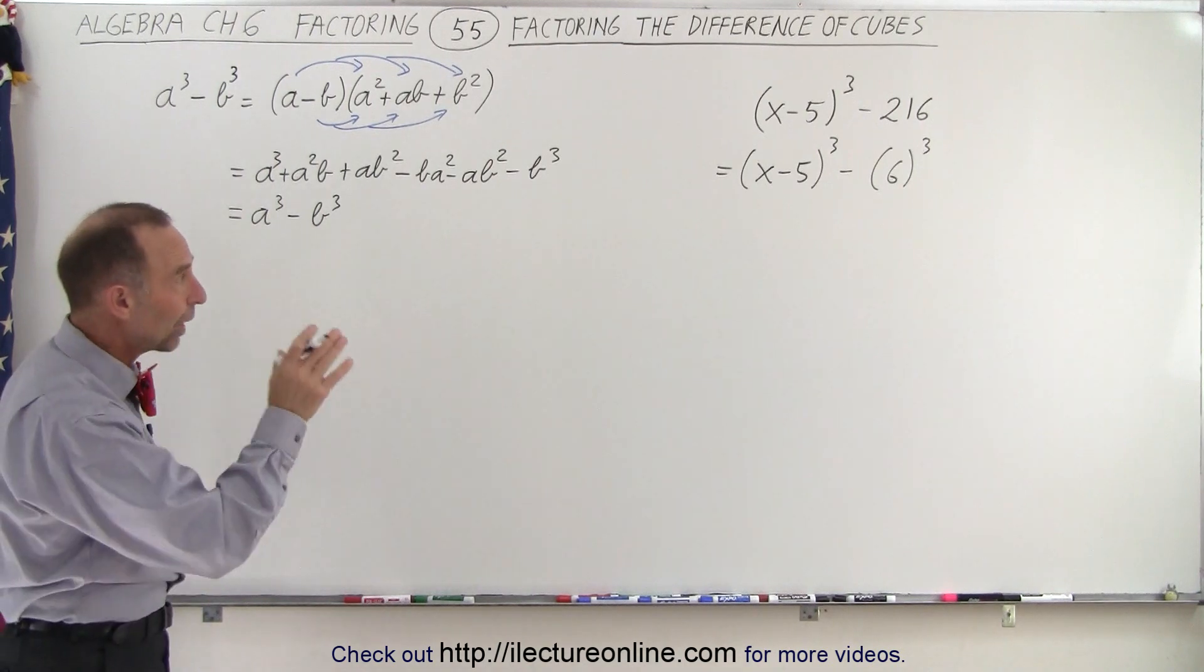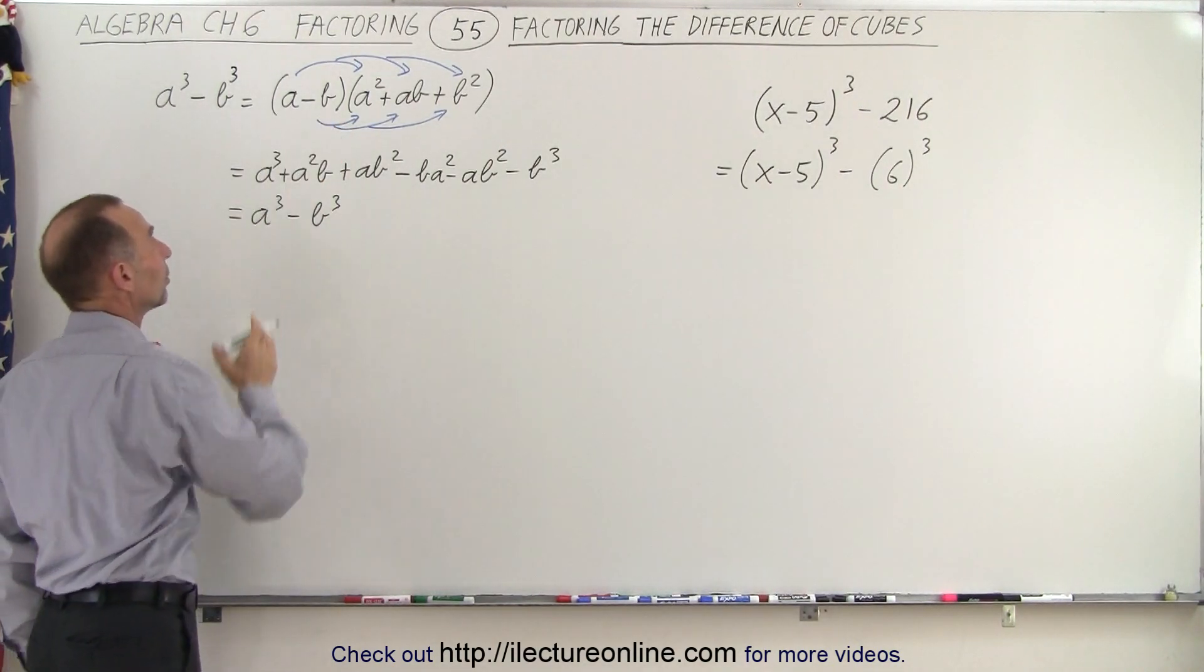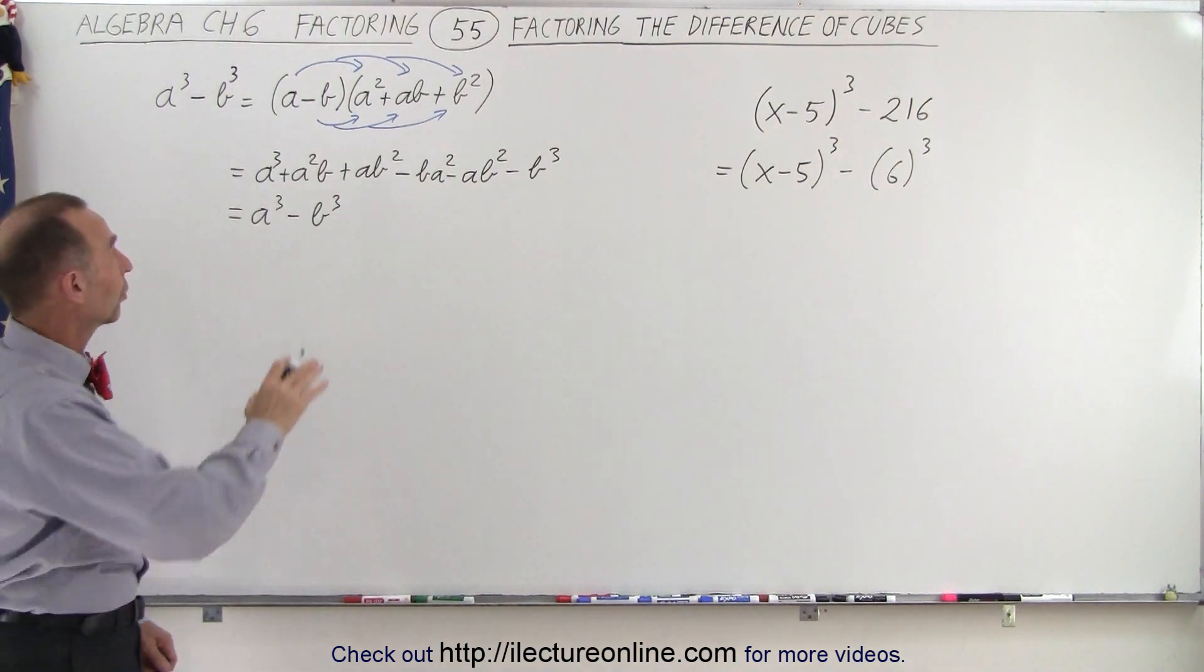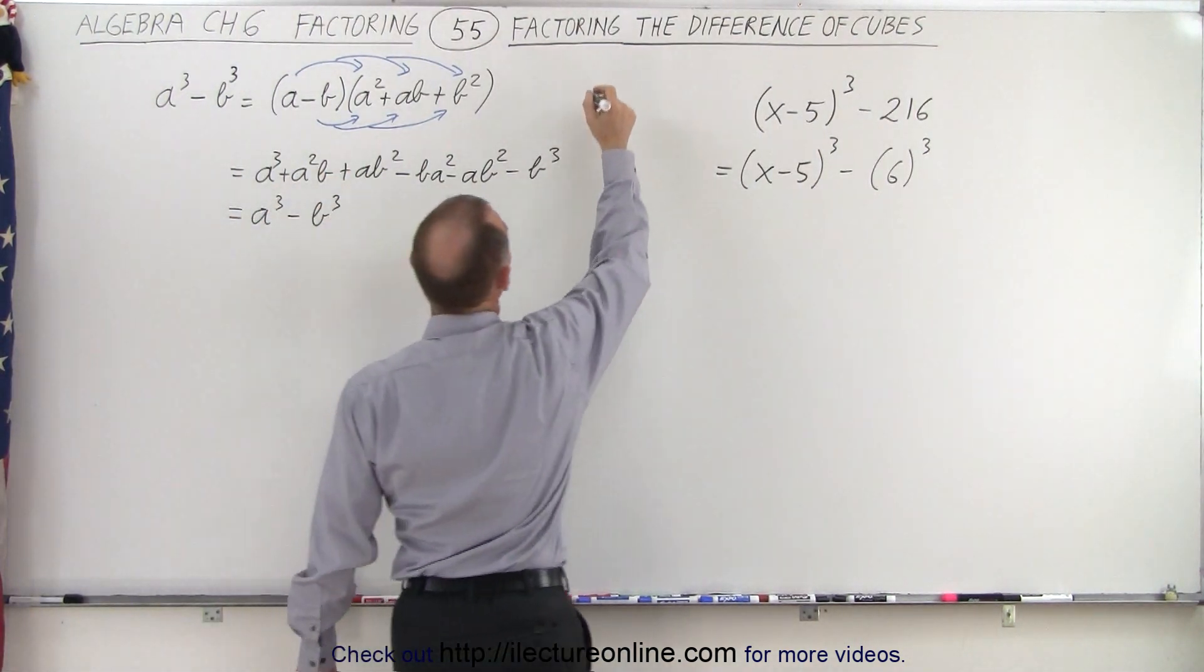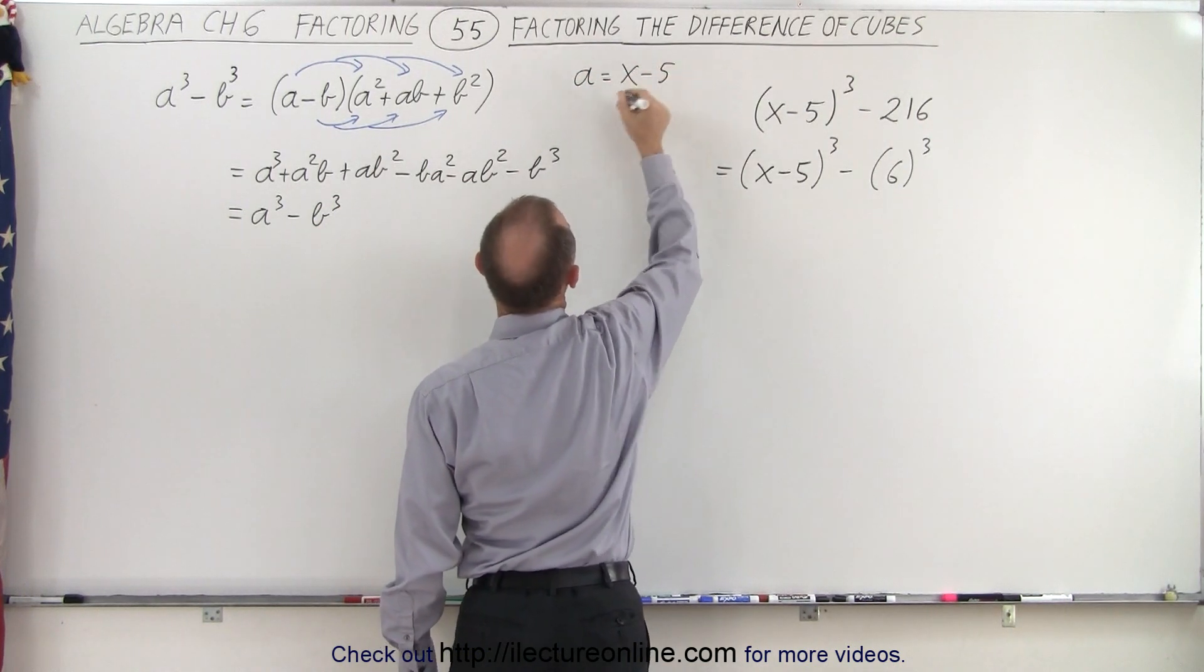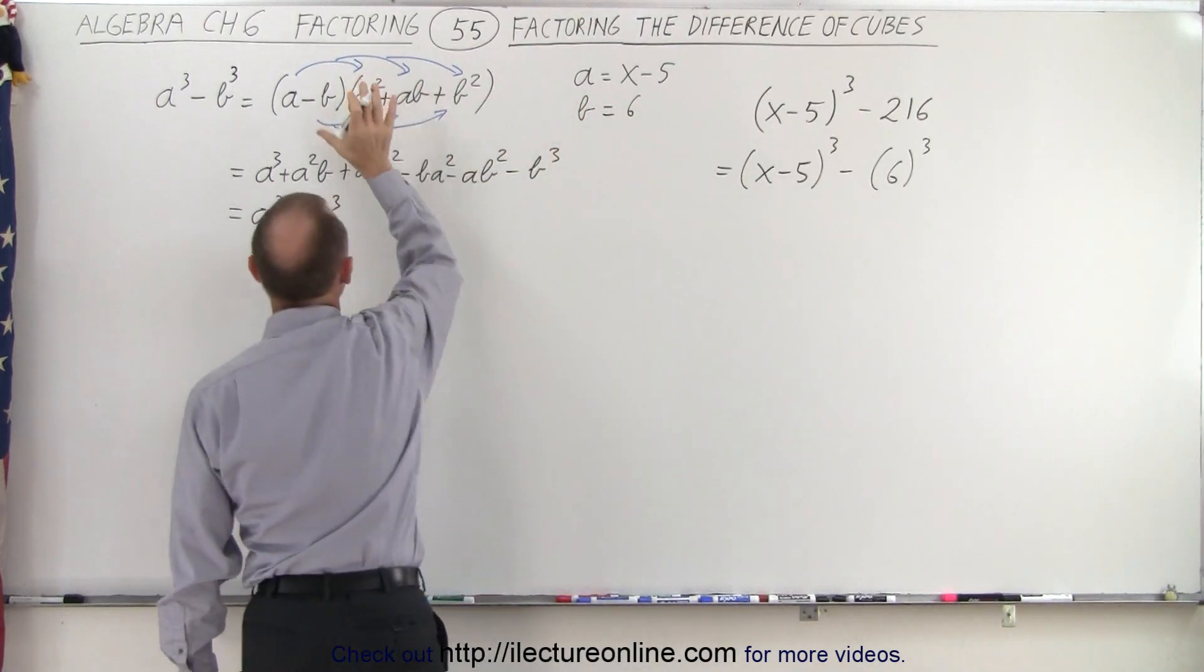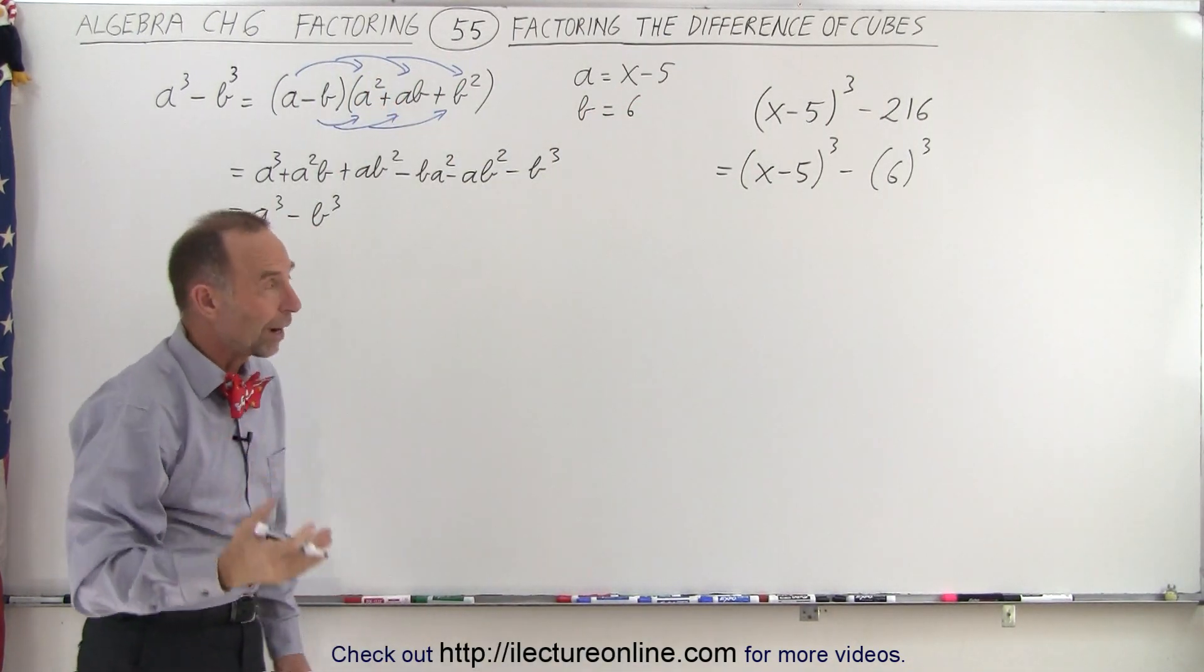But now in order to get the right result when we factor that, you really want to plug that into the general equation. You may want to write this out first, then realize that in this case, a is equal to x minus 5, and b is equal to 6, and then substitute that into here in order to get the right factor.